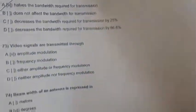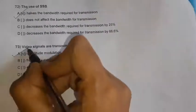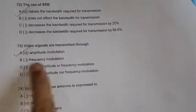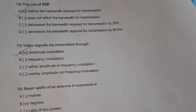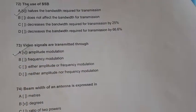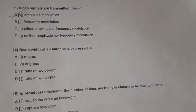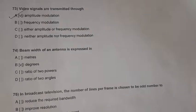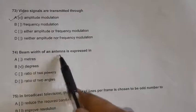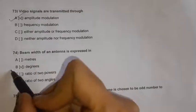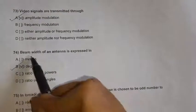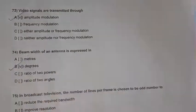Question 73: Video signals are transmitted using amplitude modulation, where frequency modulation is used for voice or speech signals. Question 74: Beam width of an antenna is expressed in degrees.